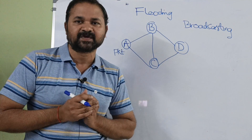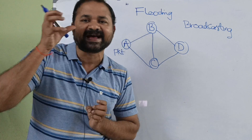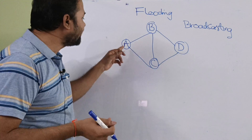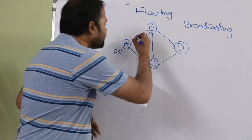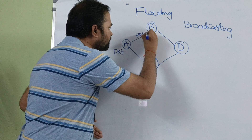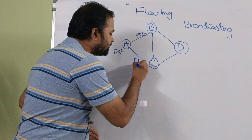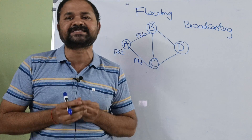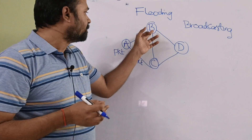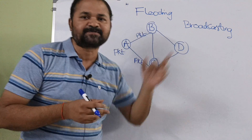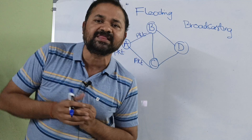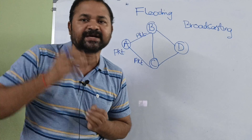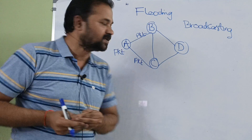Let A have a packet. A will transmit that packet to its neighboring routers. A's neighboring routers are B and C, so A will transmit this packet to B as well as C. The definition of flooding is: transmitting the packet to all neighboring routers except the source router from which the packet has arrived.